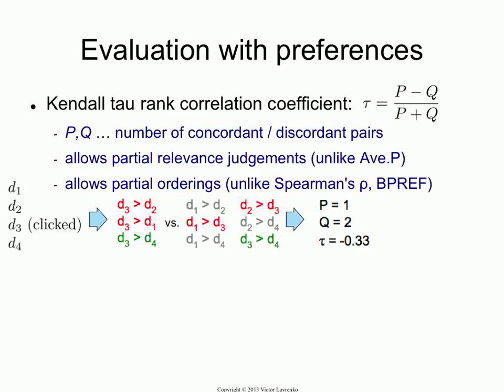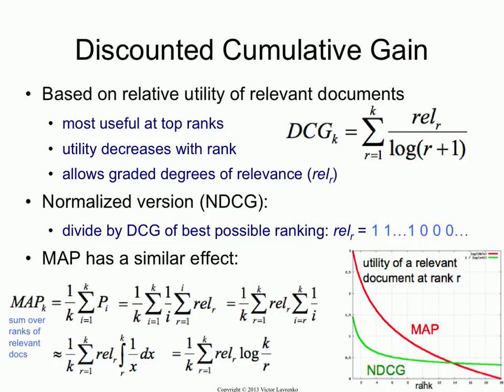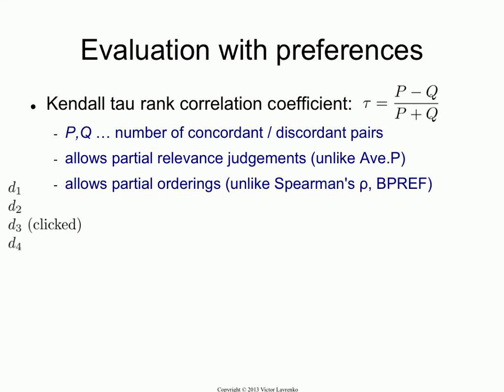One interesting question about this metric: remember when we talked about mean average precision and NDCG? For NDCG, you have to stop computing at a certain point in the ranking — the sum must stop at k, some predetermined number like 20 or 50. Whereas for mean average precision, you can compute it over the entire ranking even with millions of items, because the utility function degenerates really quickly. So MAP is a metric where you don't have to stop at a certain rank, but NDCG you do. So what about Kendall Tau — is it a metric where you have to stop at a certain point in the ranking?